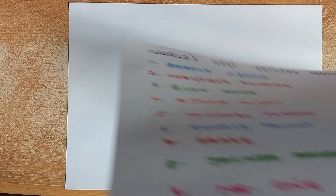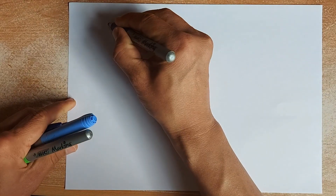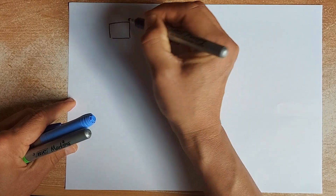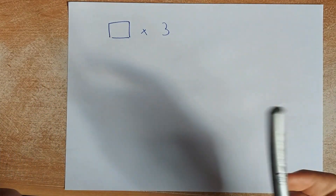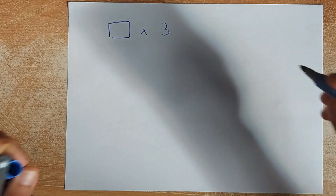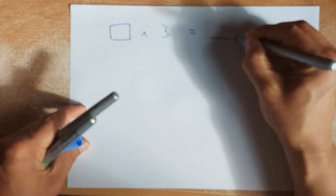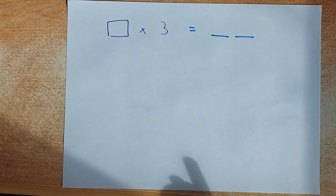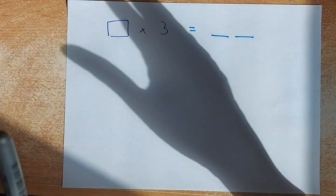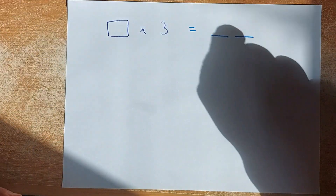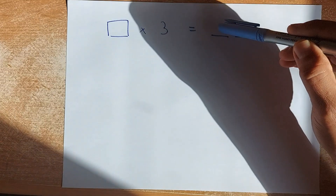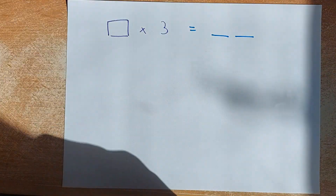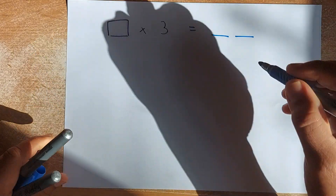The first thing you need to do is choose your number. Then multiply that number by three. For example, if you choose four, four times three gives you a two-digit number. Note that one times three is three, or written as zero three, and two times three is six, written as zero six — it could be a one-digit or two-digit number.